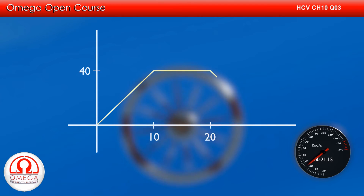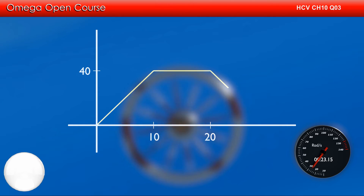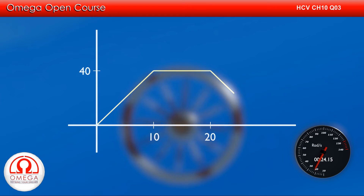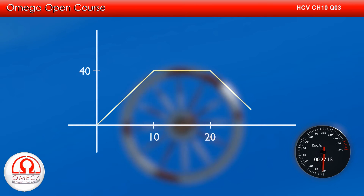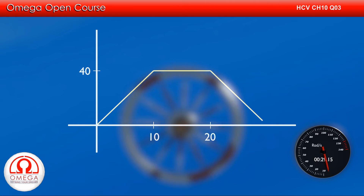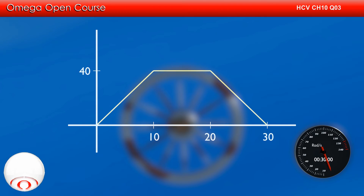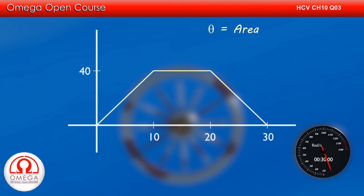After that, it will start coming down, reducing linearly to 0 in 10 seconds. Now, the angular displacement is the area of this graph.